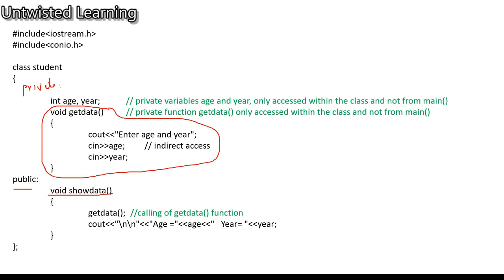Inside the public section, you have only the show data function. Now, if you want to access the get data function — since it is declared as private, you cannot access it directly from main. But you can access it indirectly by calling this function inside the show data function. You write just 'get_data();' — this is the syntax for calling a function — which gives indirect access to private variables through the public section.